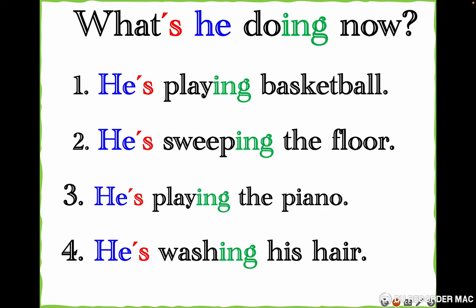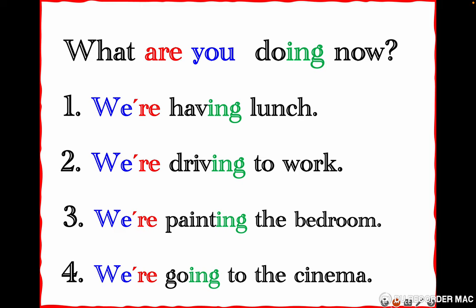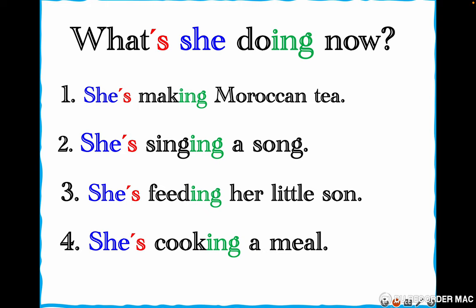Let's repeat: 'What's he doing now?' — He's playing basketball, he's sweeping the floor, he's playing the piano, he's washing his hair. 'What are you doing now?' — here 'you' means a group of people. We're having lunch, we're driving to work, we're painting the bedroom, we're going to the cinema. Let's repeat: 'What are you doing now?' — We're having lunch, we're driving to work, we're painting the bedroom, we're going to the cinema. What's she doing now?